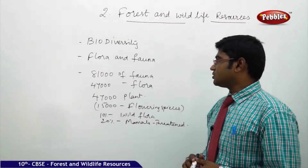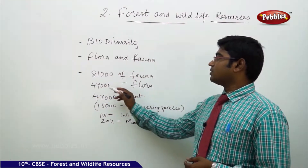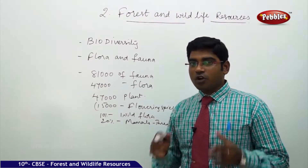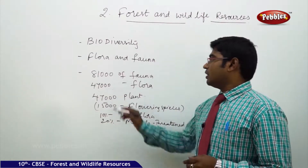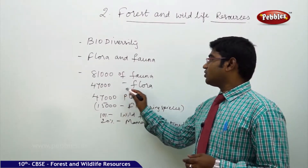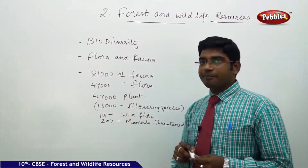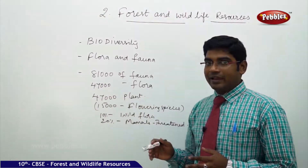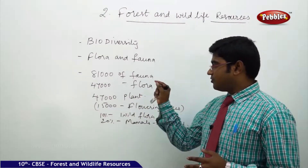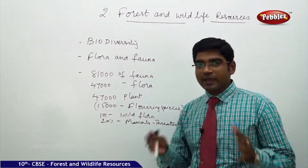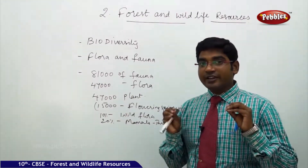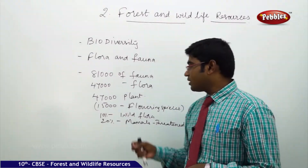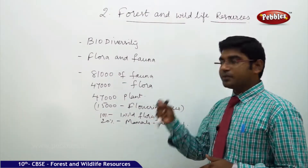According to the statistics, we have 81,000 species of fauna and 47,000 of flora. Within those 47,000 plants, we have 15,000 plants which are explicitly in the category of flowering species.